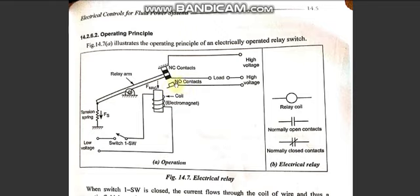Once the circuit is connected, high voltage current starts to flow through it. When the contact is established, the high voltage current passes through the circuit. The relay coil is normally denoted by CR, which stands for coil relay — we usually use the letters CR to represent it.